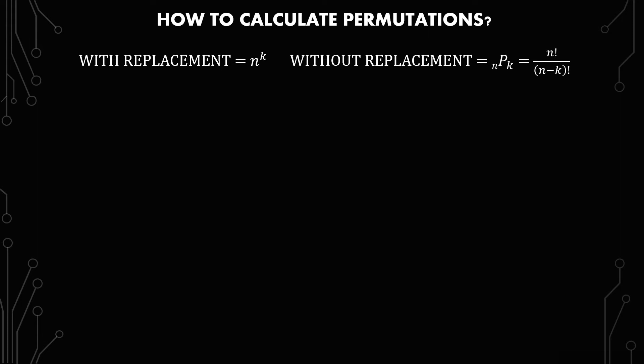In this video I'm going to go over how to calculate permutations. We have two different types of permutations, one with replacement and one without replacement. The one with replacement, the formula is n to the k and the one without replacement is n factorial over n minus k factorial.